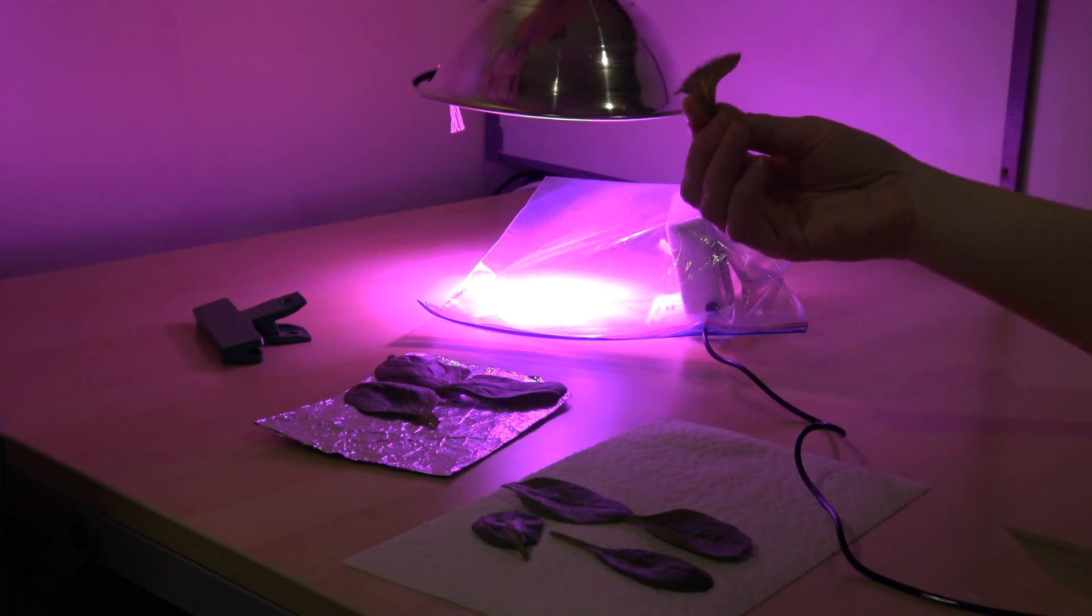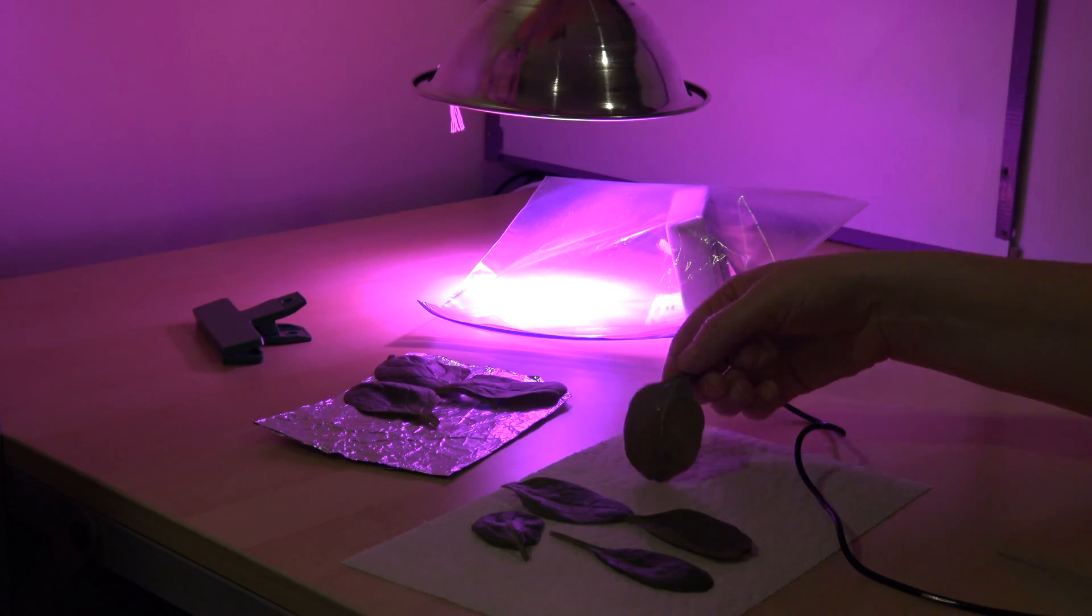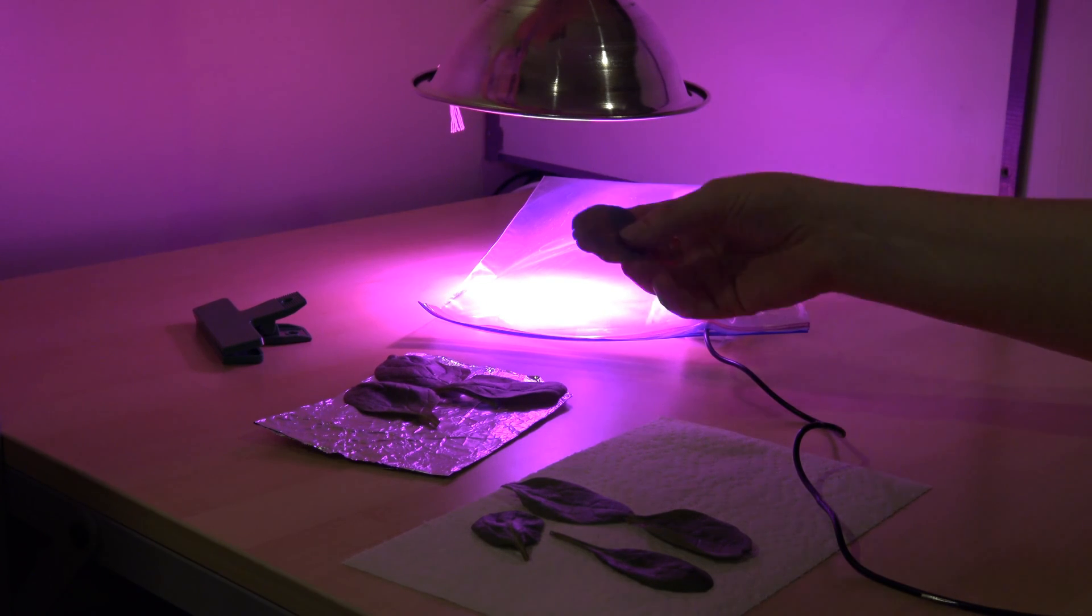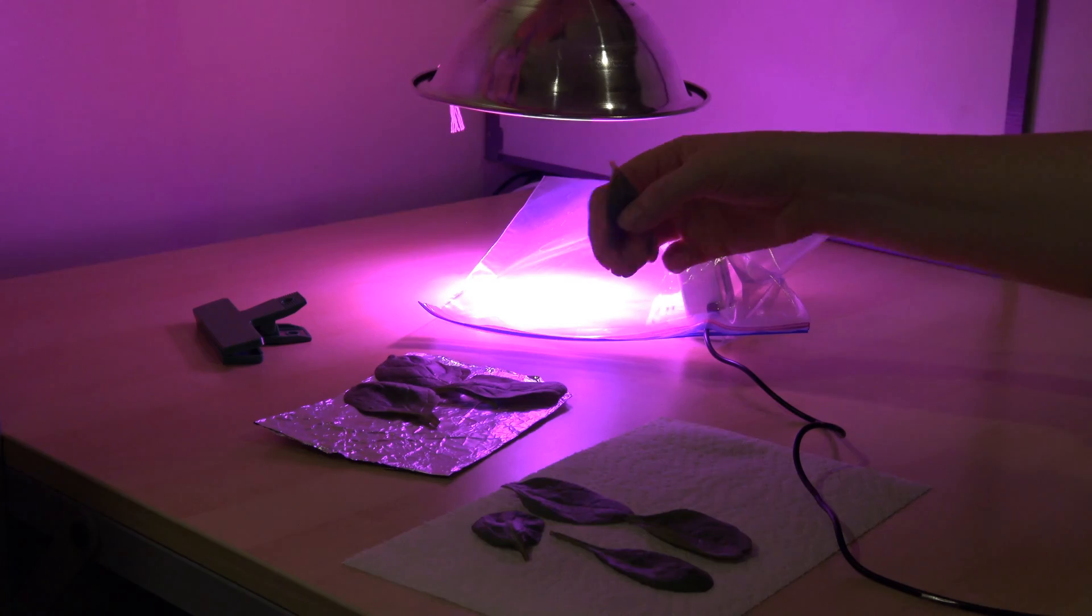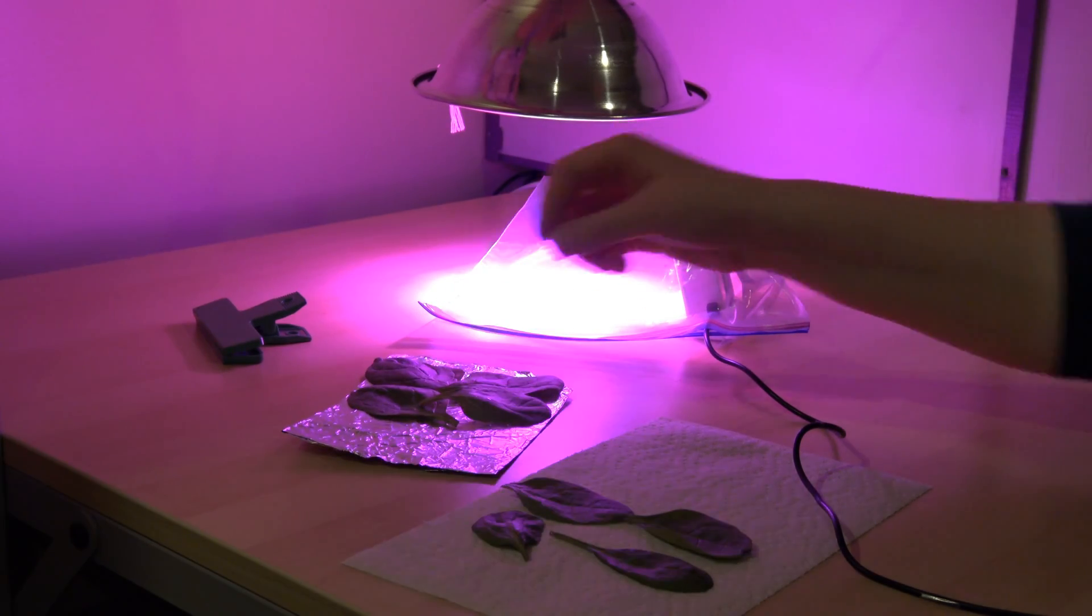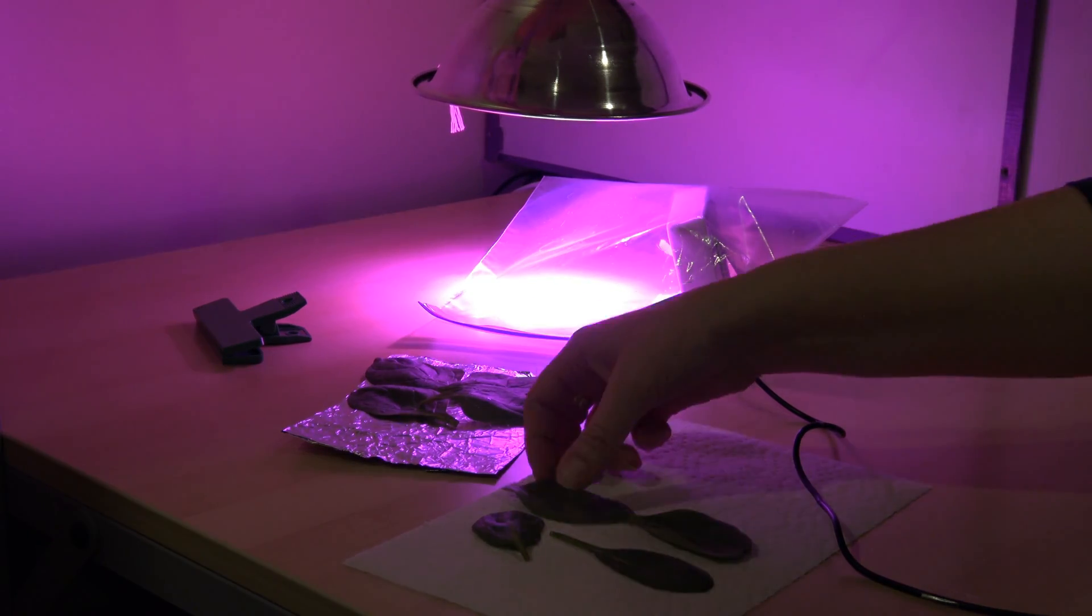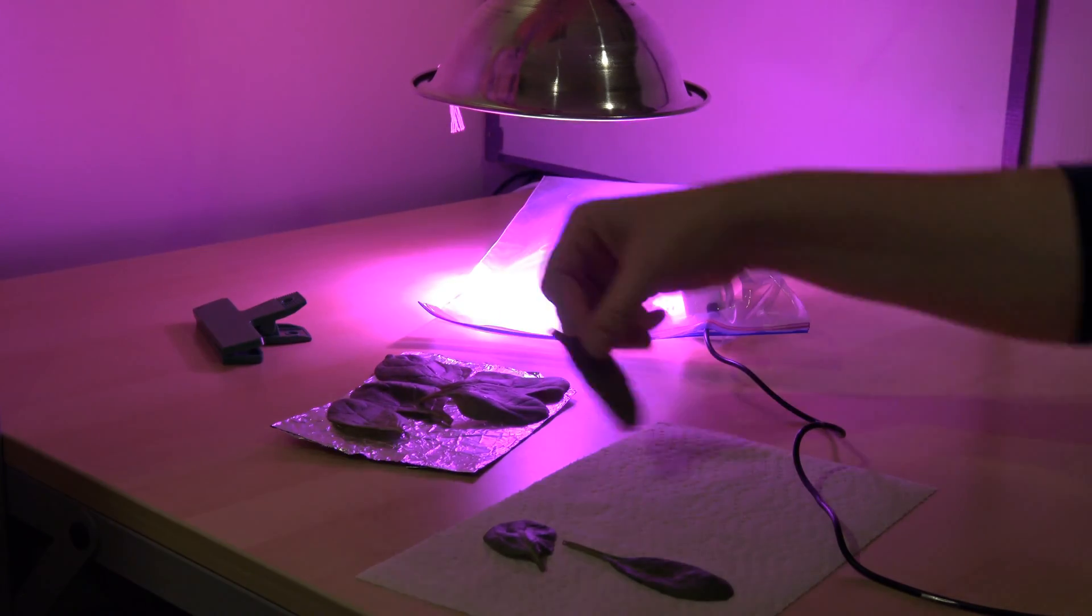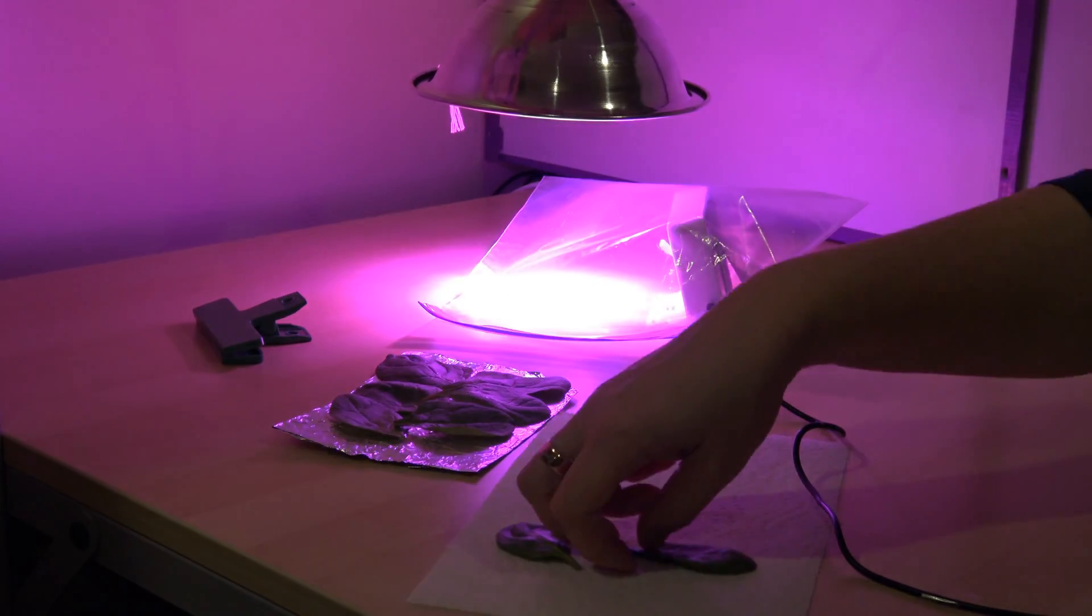When you're choosing spinach leaves from your bag or clamshell that you got from the grocery store you want to choose leaves that lay relatively flat and leaves that are relatively undamaged. Leaves with lots of damage tend to do more cellular respiration than photosynthesis and that would skew our results.